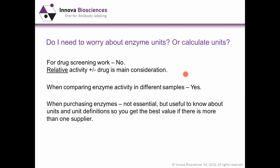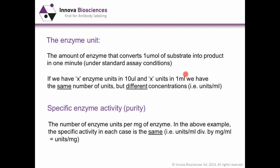When you're purchasing phosphate generating enzymes, it's not essential to know anything about units, but it can help you to make the best selection and get the best value if there's more than one supplier. The enzyme unit is defined as the amount of enzyme that converts one micromole of substrate into product in one minute. So if you have x enzyme units in 10 microlitres and x enzyme units in one mil, we have the same number of units, but we have different concentrations if we express it as units per mil.